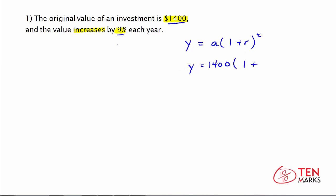R is 9%. When working with these functions, you have to convert the percentage into a decimal, so 9% as a decimal is 0.09. That means you plug in 0.09 for r in the equation, and we have a number of years, t, that we don't know.